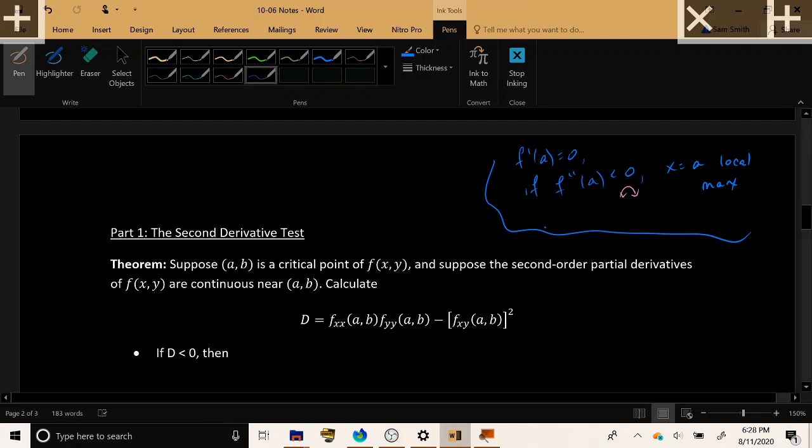And we had the statement that if f double prime of a was greater than 0, then x equals a was a local min. Because having a second derivative that was greater than 0 told us that the graph was concave up and to some extent resembled a parabola opening up.